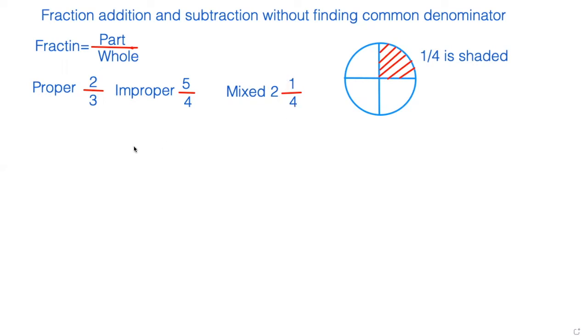The first problem I am going to do is 1 fourth plus 3 fourth. As you can see here, we have the denominator already common. We don't have to worry about it. We can go ahead and add the top numbers. So 3 plus 1 is 4 and divided by 4. So out of 2 bottom numbers, we keep 1. So 4 divided by 4 is 1.